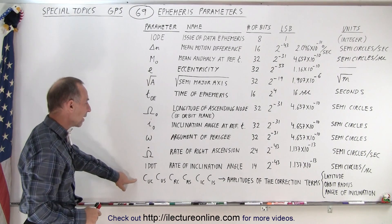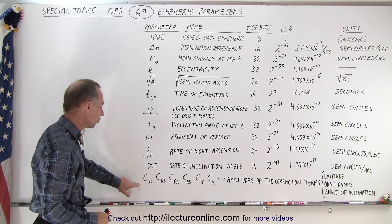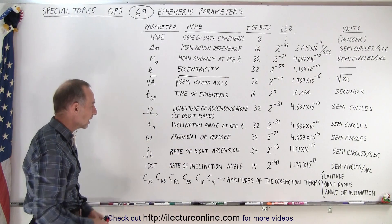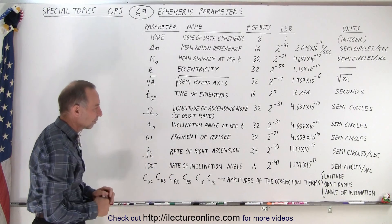Finally, we have what we call some amplitude of correction terms. There's six of them. Notice they deal with latitude, orbit radius, and angle of inclination. I didn't put the specifics down, but again,